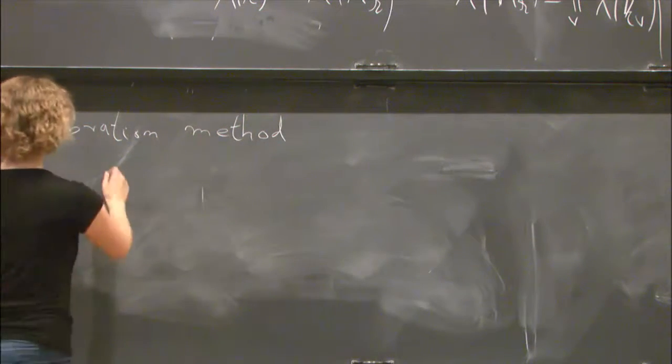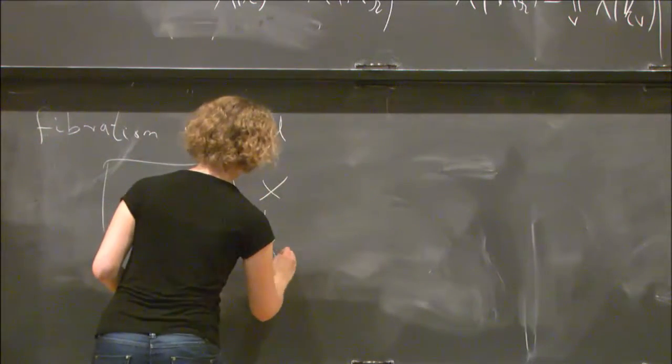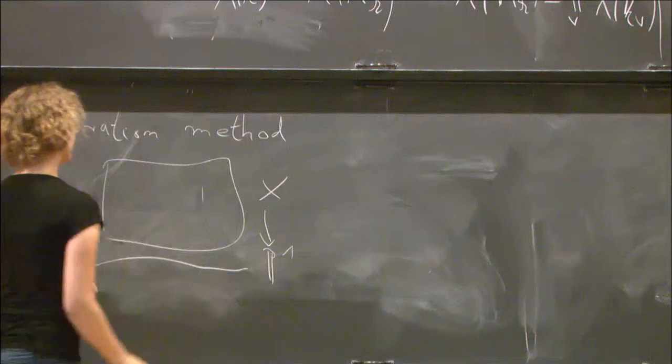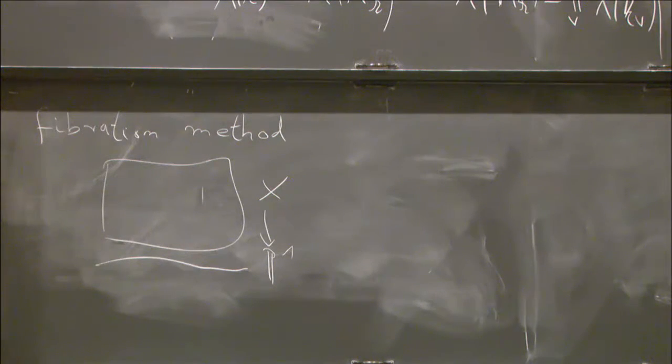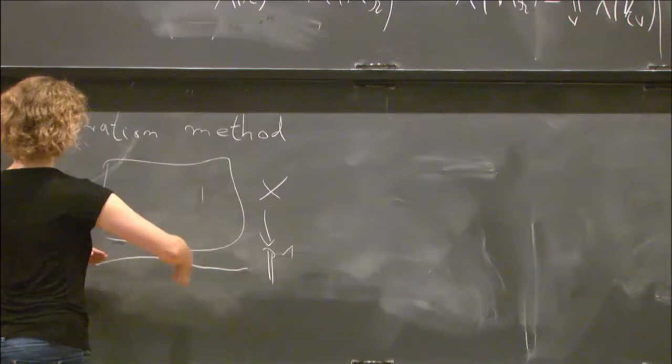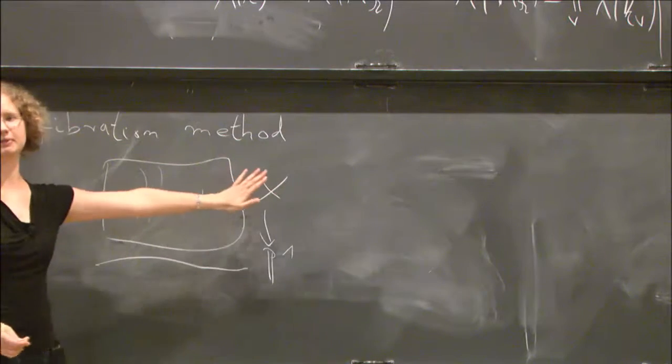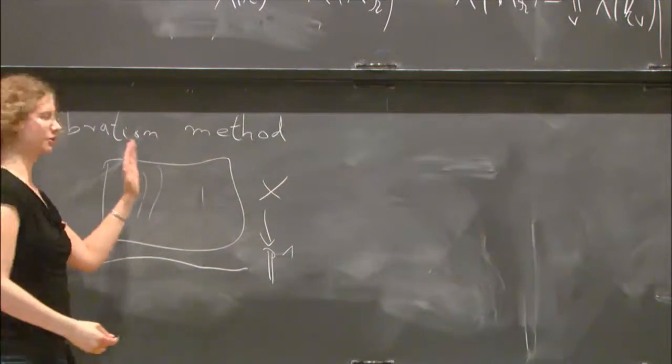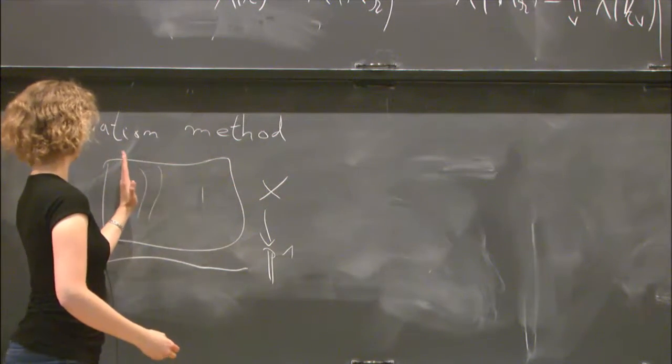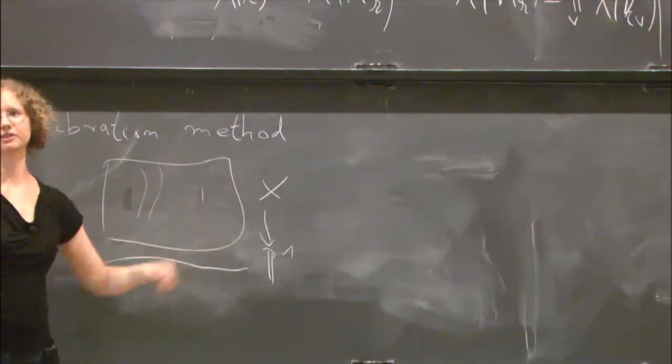The basic idea is that if you have a space X and a fibration, for example, to projective line, if you can verify that the set of rational points is dense in the Brauer set, holds for the base, and for essentially almost all fibers, then you want to show that this property holds for the whole space X. So you only want to prove that Brauer-Manin obstruction is the only obstruction to weak approximations, and Hasse principle for the fibers and for the base, then you will get it for the whole space.